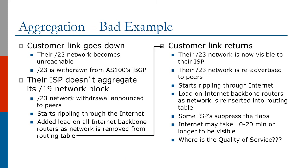What happens when the customer link goes down? Their slash 23 network becomes unreachable and is withdrawn from AS100's IBGP. Since their ISP doesn't aggregate its slash 19 network block, the slash 23 network withdrawal is announced to its peers and this starts rippling through the internet as the network is removed from routing tables.